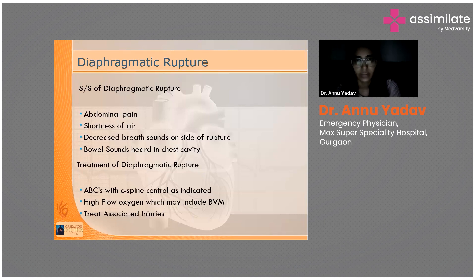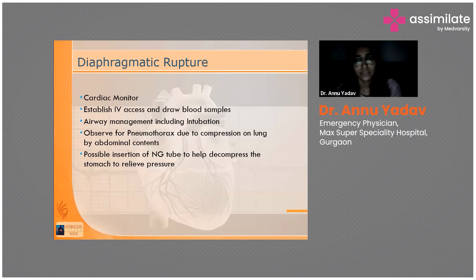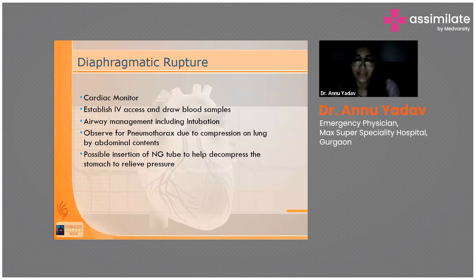Associated injuries are majorly present in these patients, so check for pneumothorax due to compression of the lung by abdominal contents. One useful intervention is placing a nasogastric tube to decompress the stomach. Since the stomach is now in the chest, the NG tube will help relieve the pressure within the stomach and chest cavity.